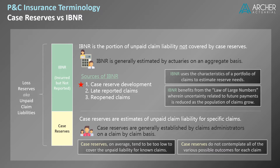The third source of IBNR is reopened claims, which is fairly self-explanatory. The last source of IBNR is pipeline claims — those claims that have been reported but are still in the administrative pipeline, so they have not yet been processed by claims administrators.